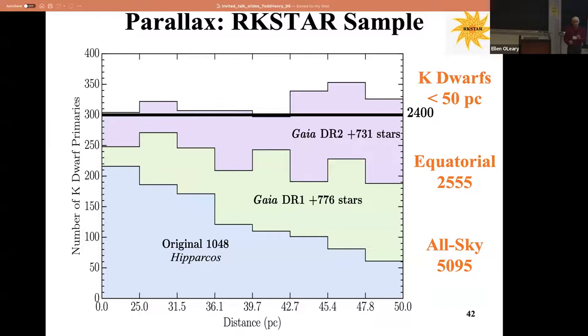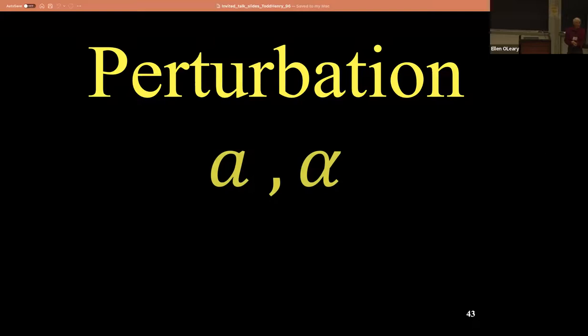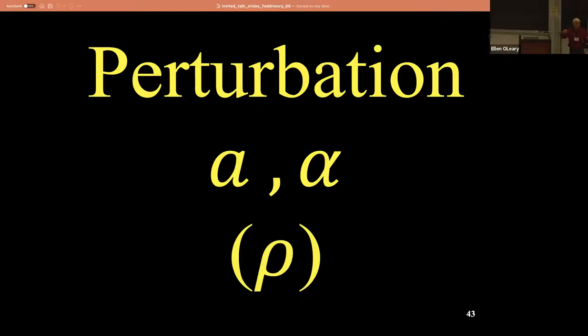The best one - perturbations. We typically use A for the semi-major axis of an orbit, or alpha for a photocentric orbit as opposed to a relative visual orbit. And at a given epoch, you often see the symbol rho - that's just the separation at a given epoch. A is the semi-major axis, and alpha is the one we use for a photocentric orbit.